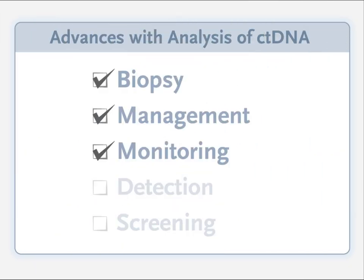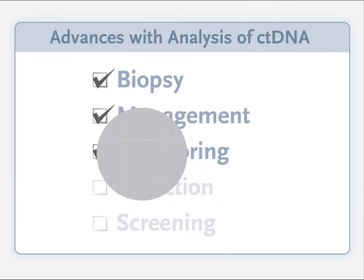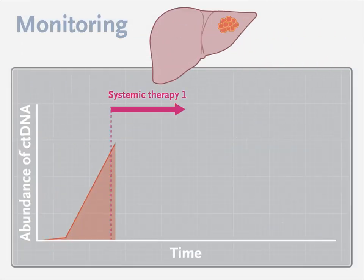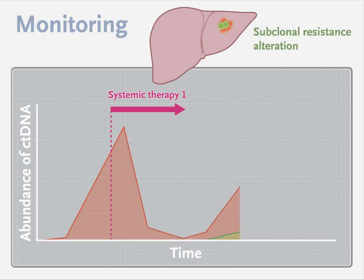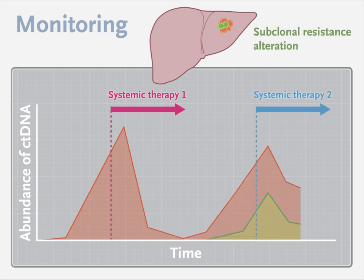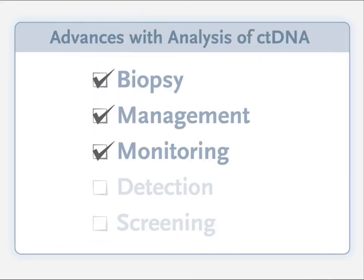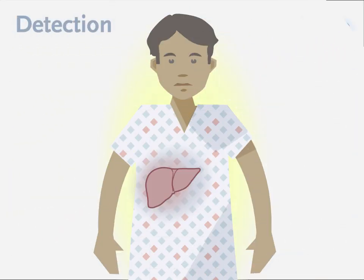ctDNA analysis could be used to monitor for possible acquired resistance through tumor subclones that emerge under the selective pressure of cancer therapy. ctDNA could also be analyzed for the early detection of new cancers or relapse in patients after surgery or adjuvant therapy.